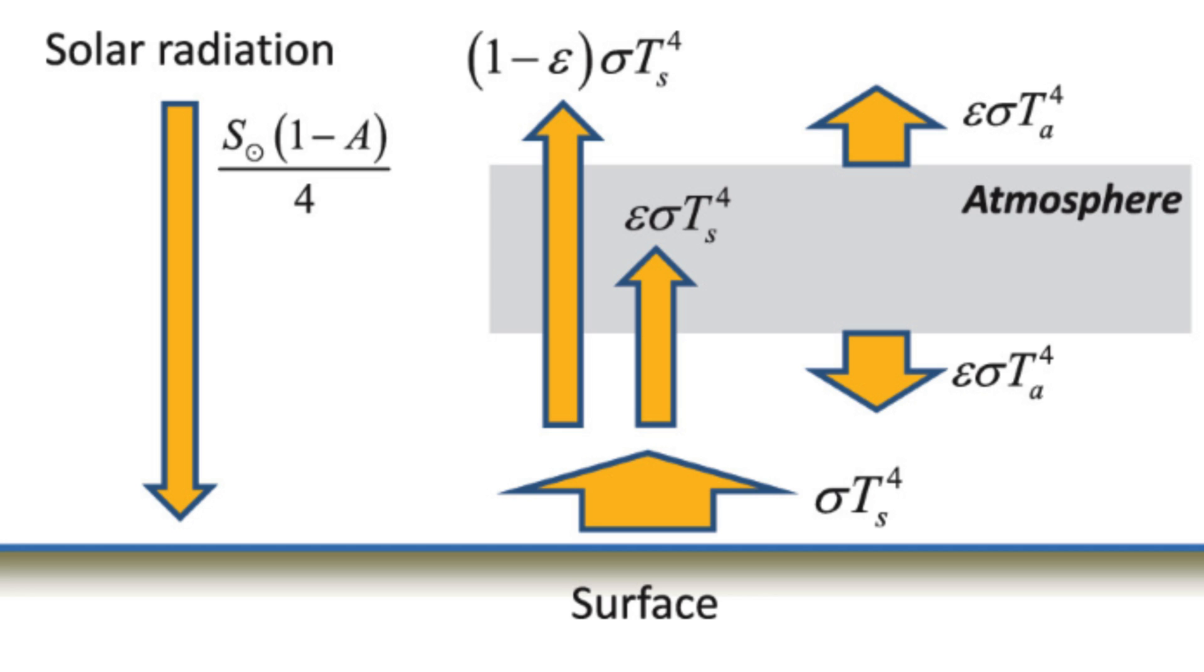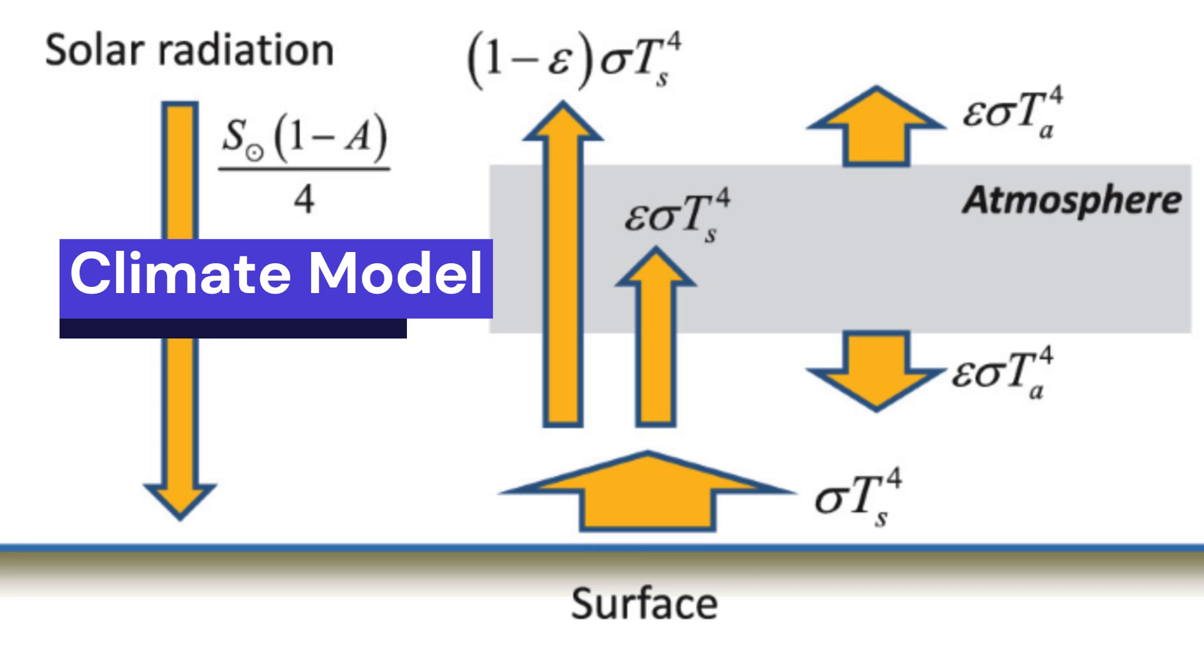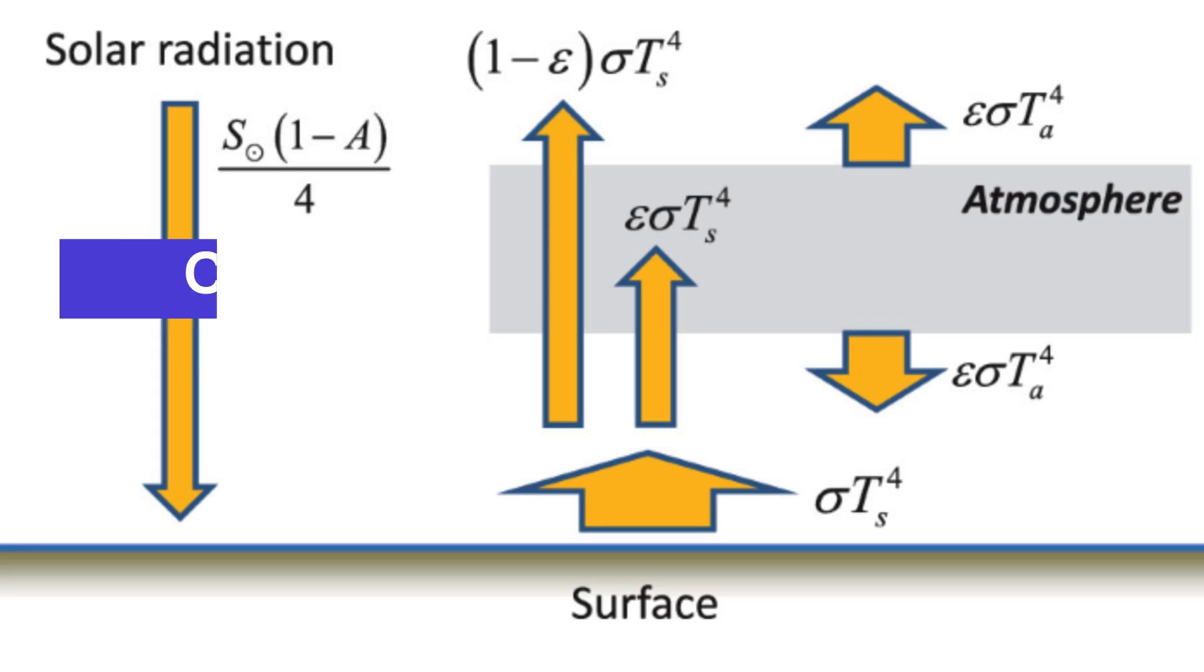This is the diagram they used to describe their climate model, in which TS and TA are the temperatures for the surface and the atmosphere respectively. Here, it is assumed that the atmosphere is transparent to solar radiation, meaning no shortwave radiation can be absorbed by the model atmosphere. As a result, the energy for infrared radiation by the atmosphere is merely provided by the heated surface. Remember this.